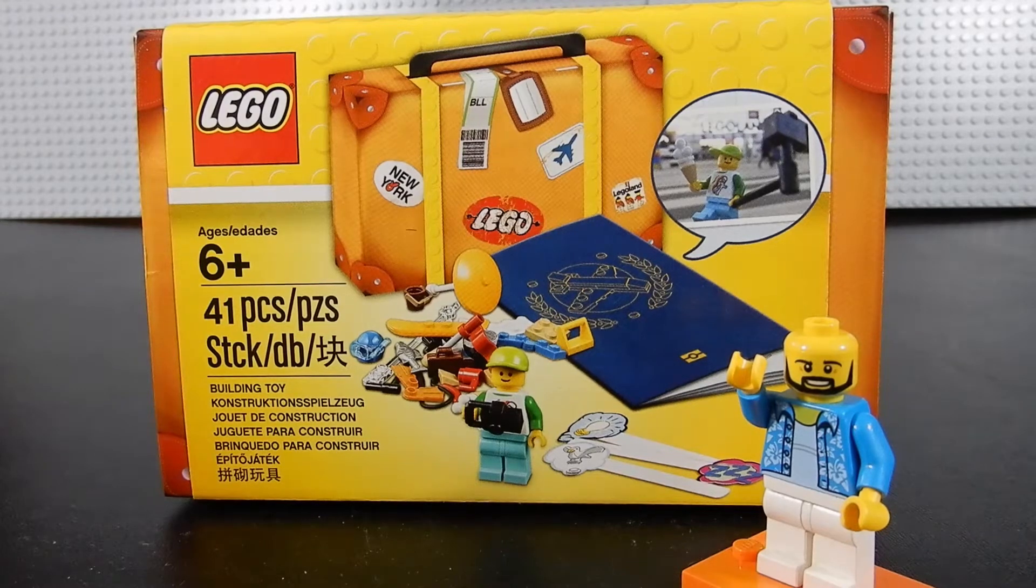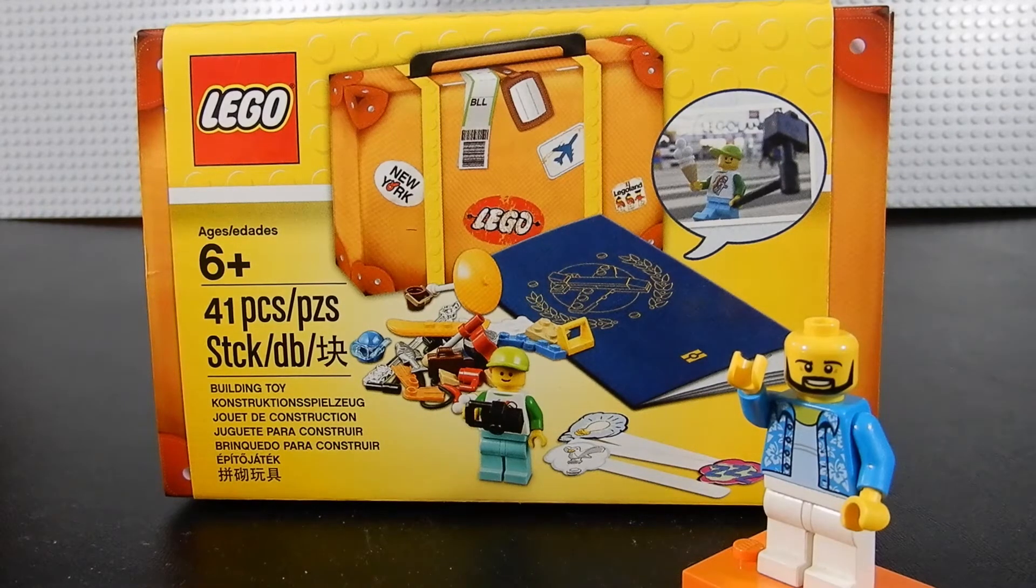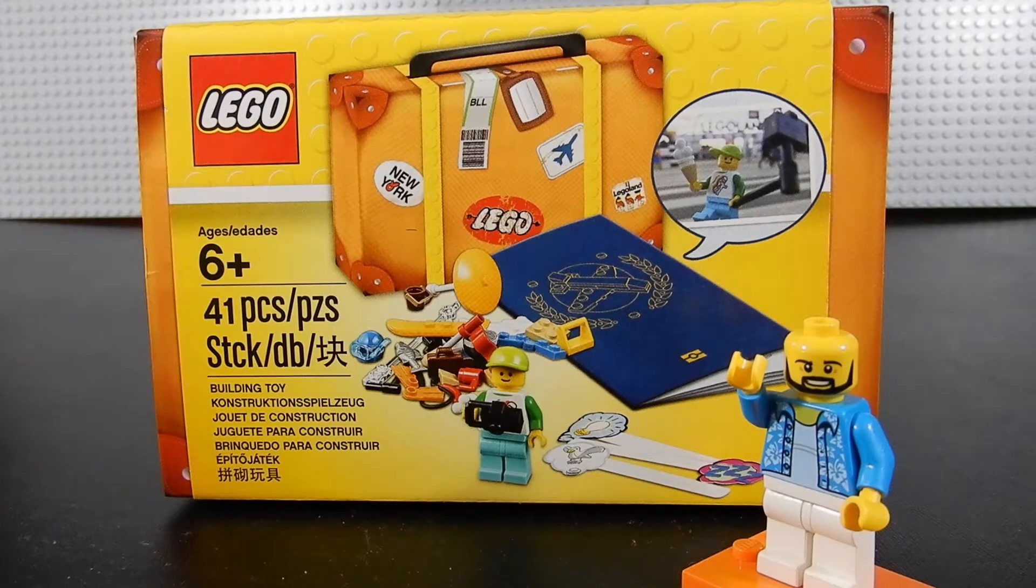Hello friends, Christian here with Brick Life Crisis again. Today we're taking a look at set number 5004932. The set consists of 41 pieces including one minifigure. This is the travel building suitcase.